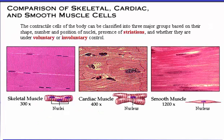The contractile cells of the body can be classified into three major groups: skeletal, cardiac, and smooth muscle cells. These three types of cells can be distinguished on the basis of their shape, number of nuclei, position of nuclei, presence of striations, and whether they are under voluntary or involuntary control.